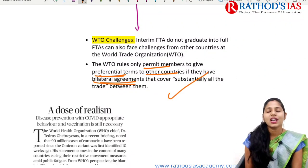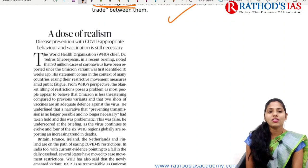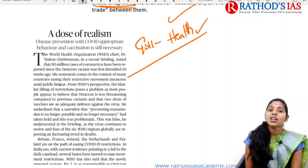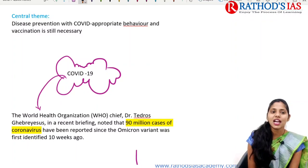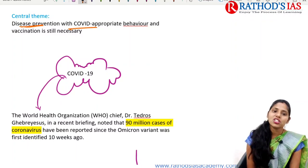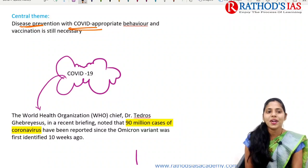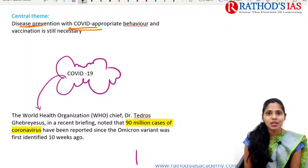Now let us see the next topic regarding COVID-19 appropriate behavior. This article is important from GS Paper 2 under health. The central theme is that disease prevention, COVID-19 appropriate behavior, and vaccination are still necessary mainly to control the transmission of COVID-19. We need to focus on prevention, on COVID-19 appropriate behavior, and on vaccination.